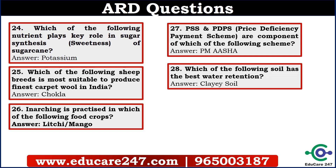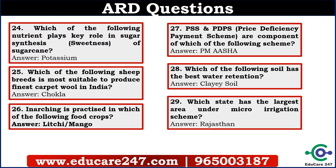The twenty-eighth question is: which of the following soil has the best water retention? The answer is clay soil. The twenty-ninth question is: which state has the largest area under micro-irrigation scheme? The answer is Rajasthan. Many students are confused with Tamil Nadu, but the answer is Rajasthan.